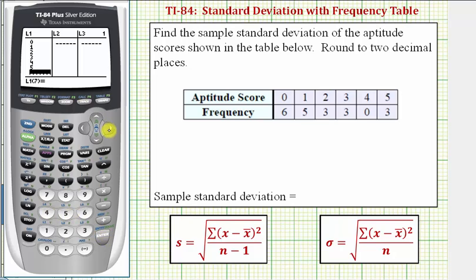And now I'll press the right arrow and enter the frequency in L2. So we have six, enter, five, enter, three, enter, and so on.